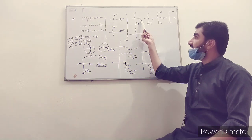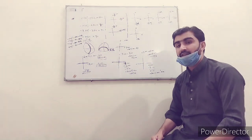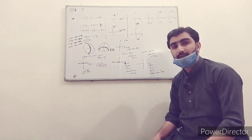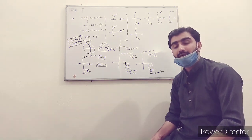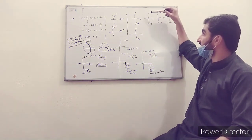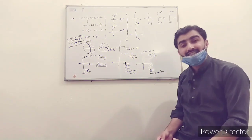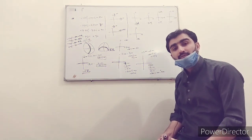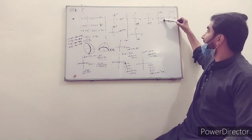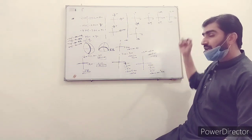If power at the vertical meridian is plus and power at the horizontal meridian is zero, this is simple hypermetropic astigmatism. If power at one meridian is minus and power at the other meridian is zero, this is simple myopic astigmatism. If power at both meridians is minus — for example, −2 and −3 — this is compound myopic astigmatism.